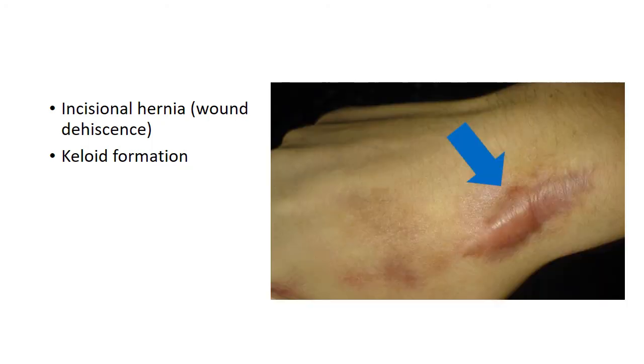Another complication is incisional hernia, commonly referred to as wound dehiscence. This happens due to a weak scar — the weak scar can lead to bursting open of the wound, and this is called incisional hernia. Another common complication is keloid formation or hypertrophied scar. At times the scar formation is very excessive, ugly, and painful due to excessive formation of collagen, and this condition is referred to as keloid formation.